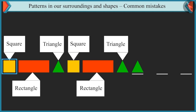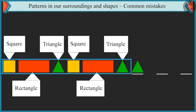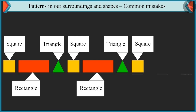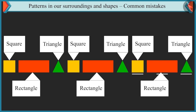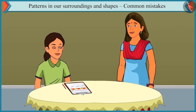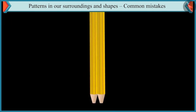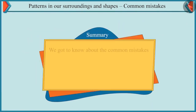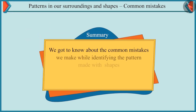First shape is square, second is rectangle, and third is triangle. If we repeat these shapes in this order, then after triangle comes square, after square comes rectangle, and after rectangle comes triangle. You have to look carefully at the pattern and understand it no matter how many shapes or colours are used. This pattern is now complete. Well done, Chutki. In this video, we got to know about the common mistakes we make while identifying the pattern made with shapes.